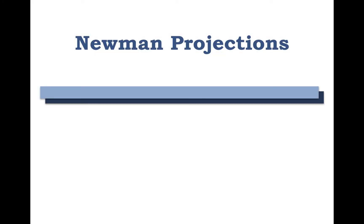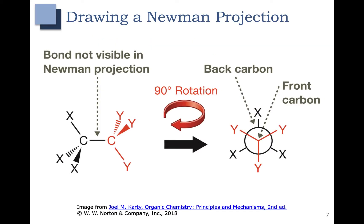In this video we're going to talk about Newman projections and how we use them to show rotation about carbon-carbon single bonds. Here's an explanation of how to draw a Newman projection. The Newman projection represents the orientation about a single bond. The bond that we're looking at is not actually shown in the Newman projection — it's hiding back there somewhere.